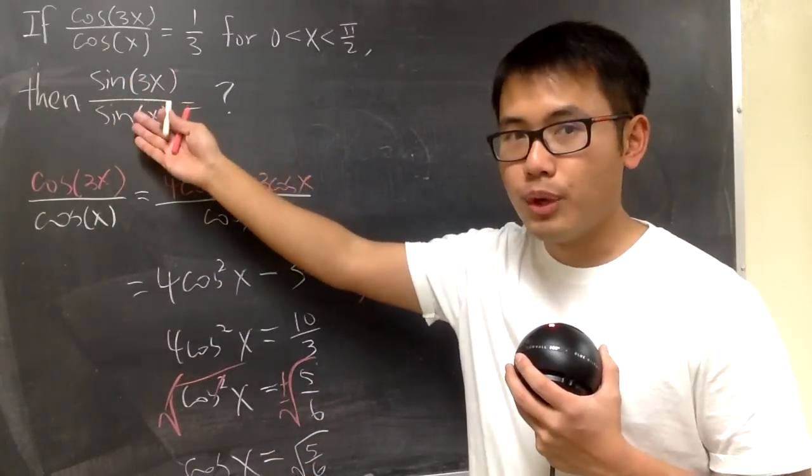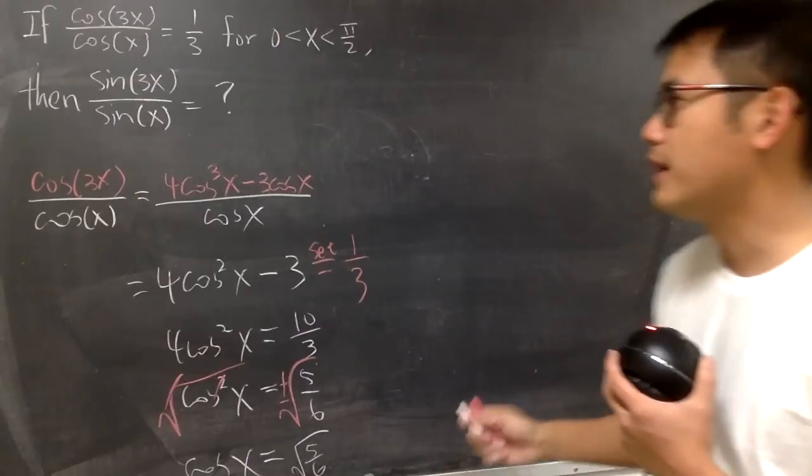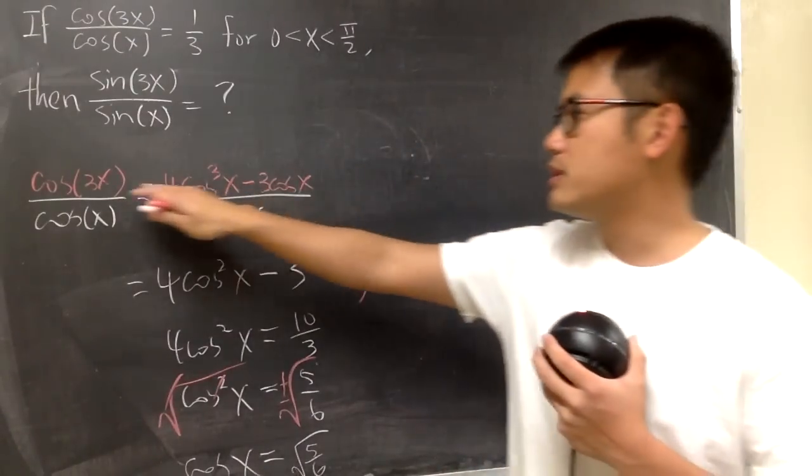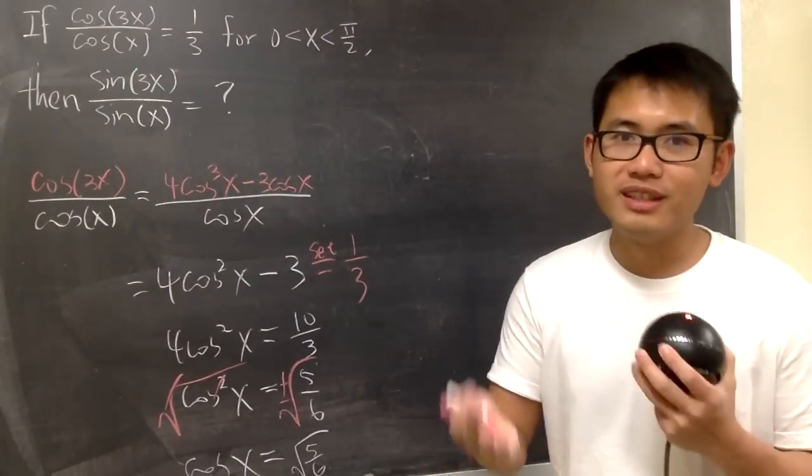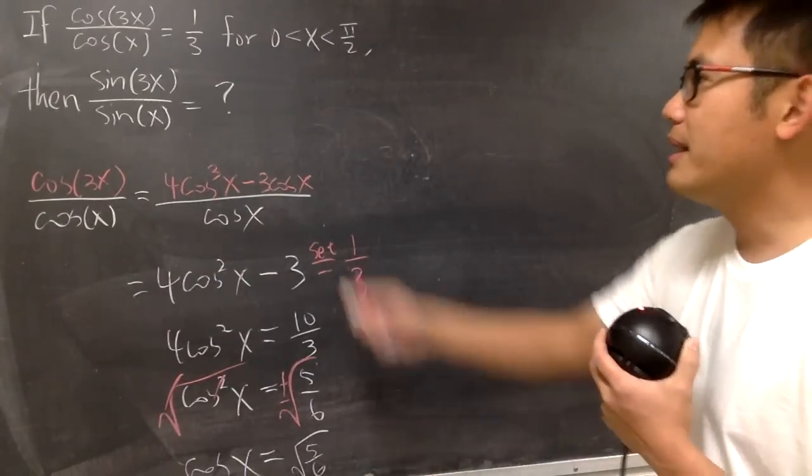I will just play around with the triple angle identity for sine of 3x. If you want to see how we come with the triple angle identities, you can check out my video. I will have the links to those videos in the description for you guys.